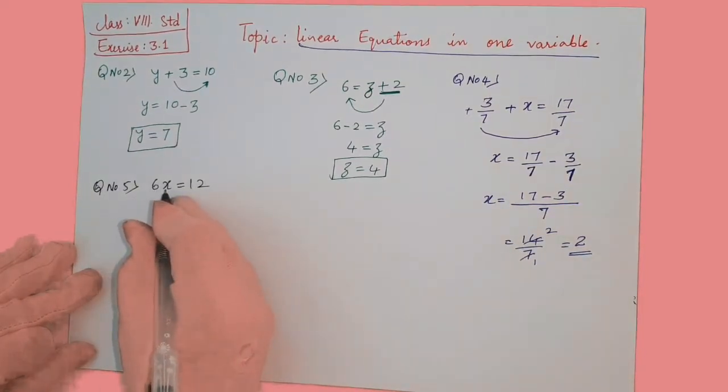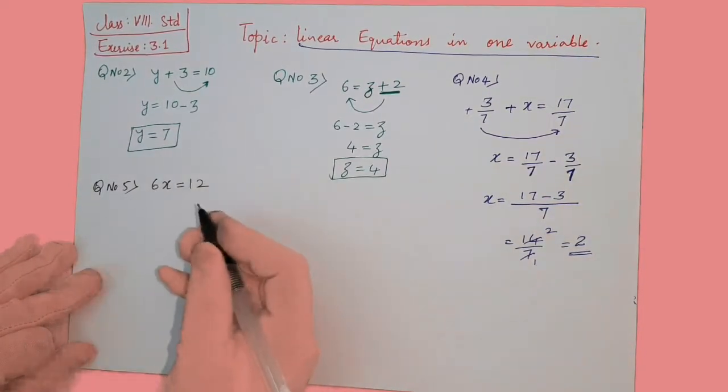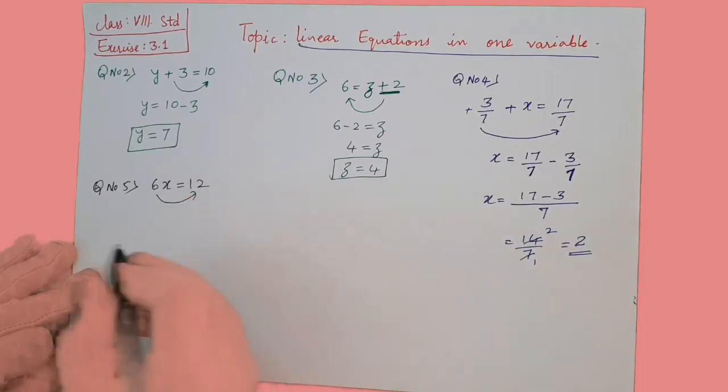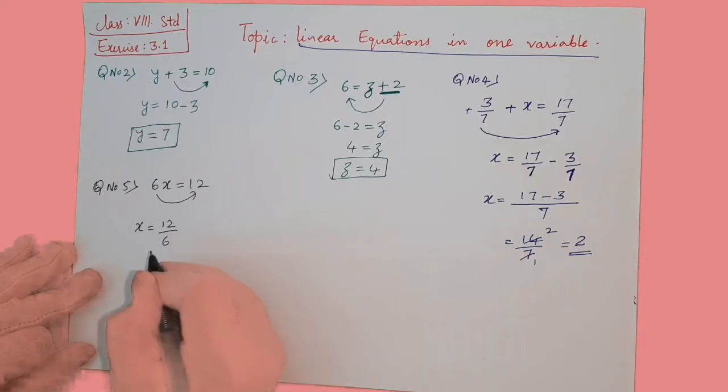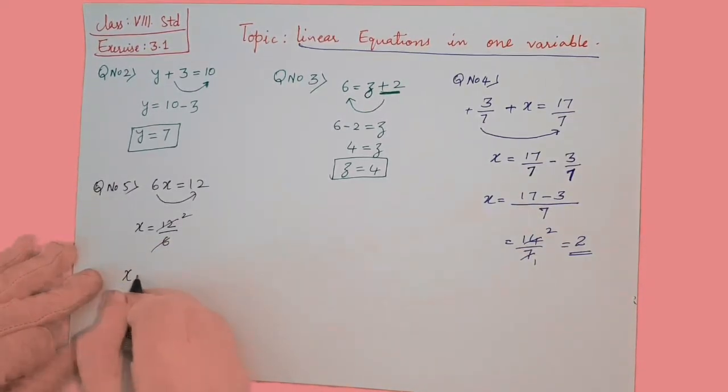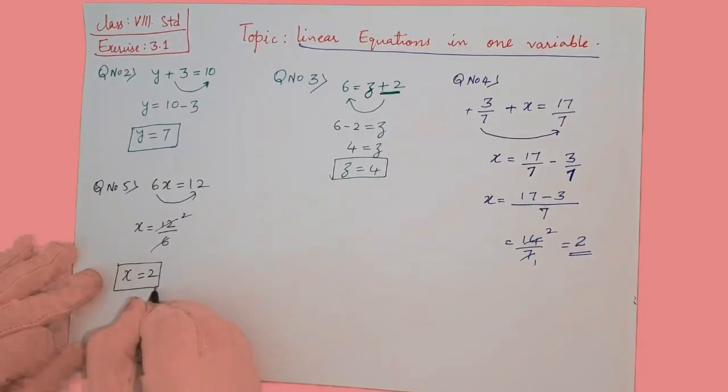This means 6 and x are in multiplication. When you transpose, it will be division. So it will be x is equal to 12 by 6. Then 6 into 1, 6 into 2 gets cancelled. So x value is equal to 2. So what have we done in this method?